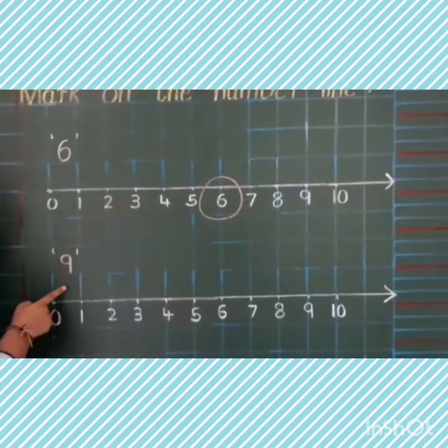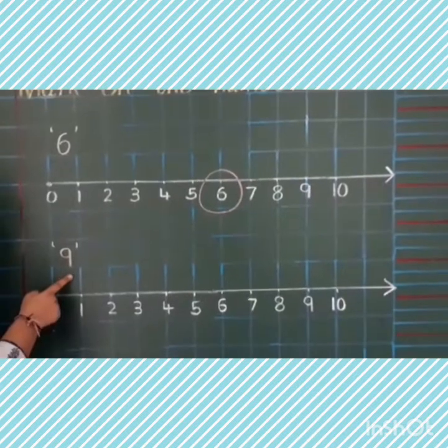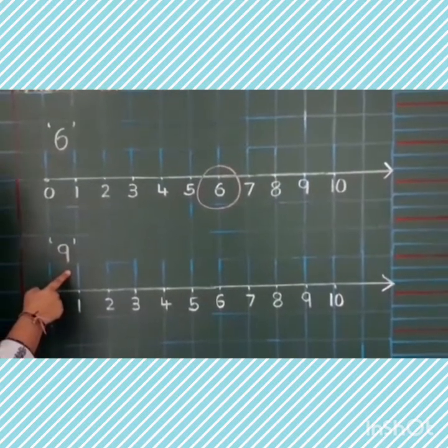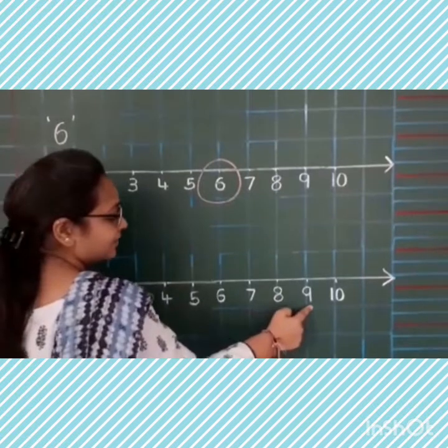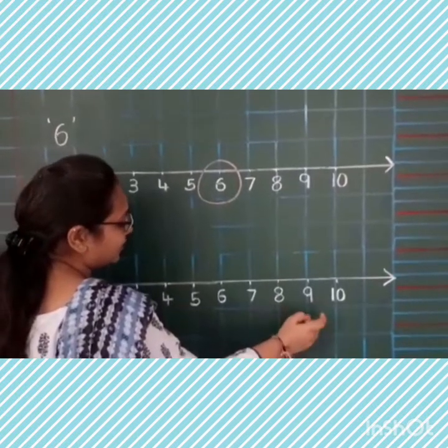Next. Which number is this? Nine. And where is nine on the number line? Here. We are going to encircle it.